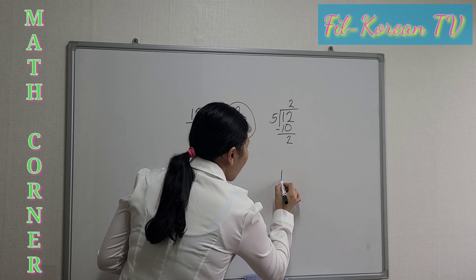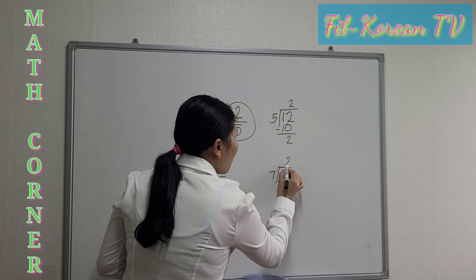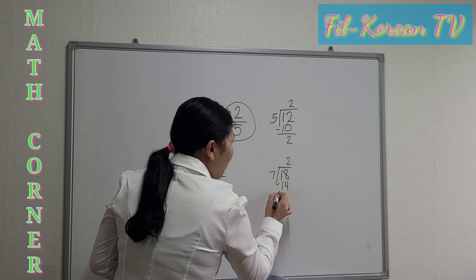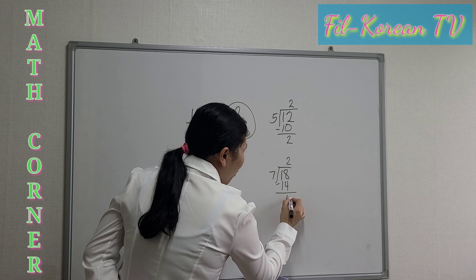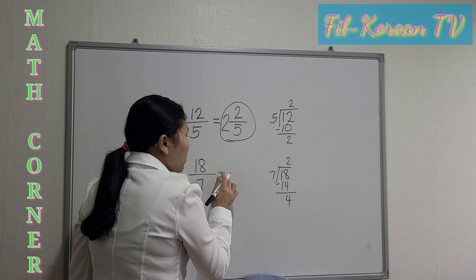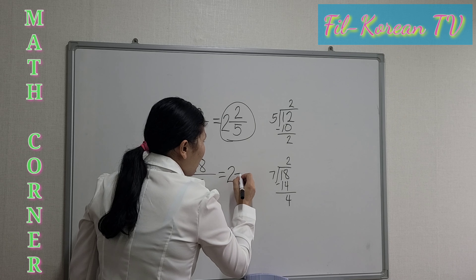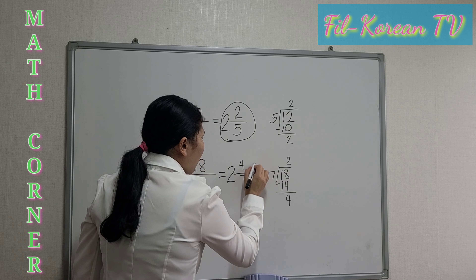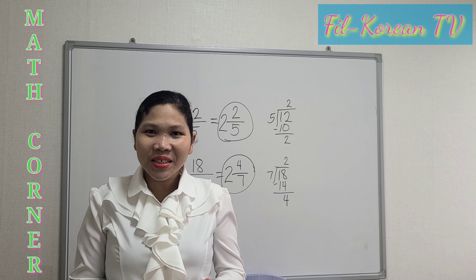Next, we will divide 18 by 7. The answer is 2. 2 times 7 equals 14. Then subtract: 18 minus 14 is 4. The whole number is the quotient, which is 2. The remainder is 4, and the denominator is 7. So the answer is 2 and 4 sevenths.